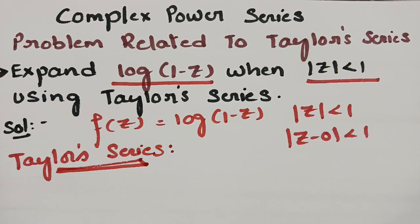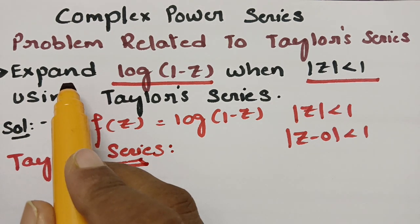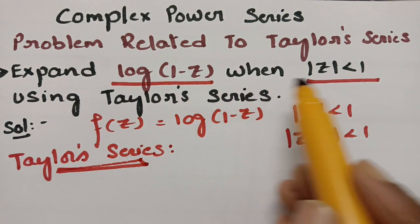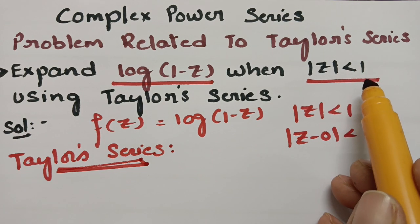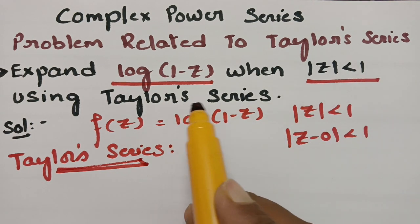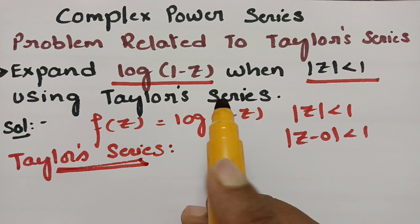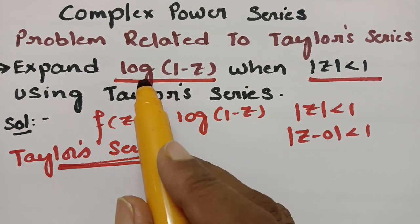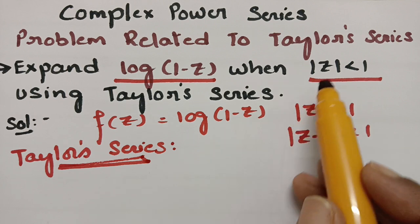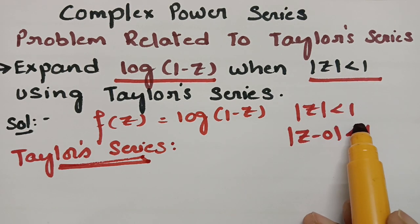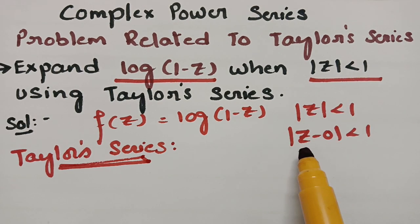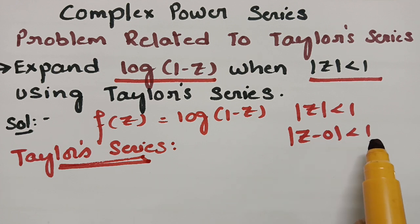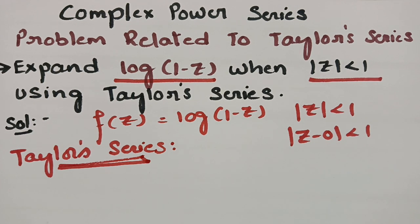Today's video is on the problem related to Taylor series, a topic from complex power series. We have to expand log(1 - z) given |z| < 1. We will use the Taylor series for this, and we can write the condition as |z - 0| < 1.